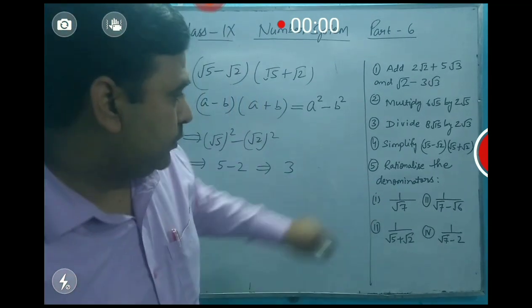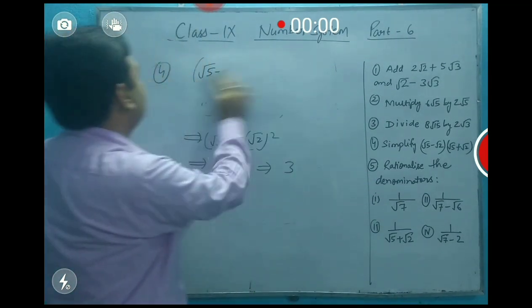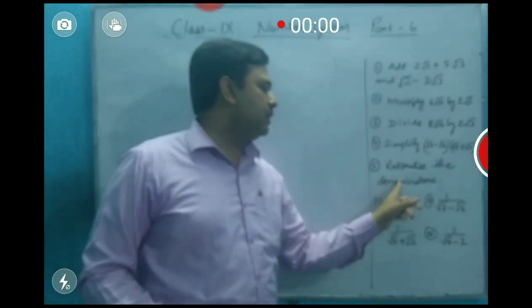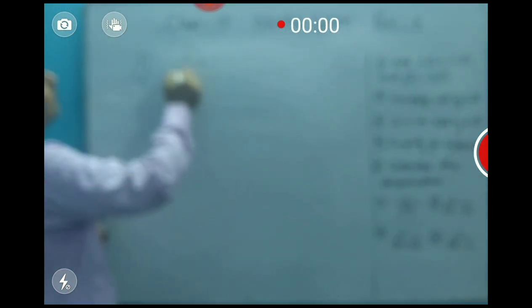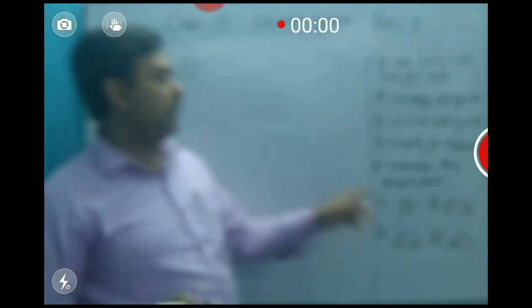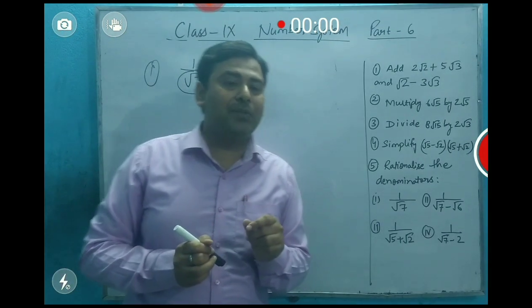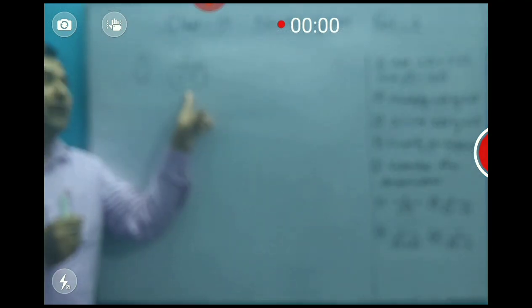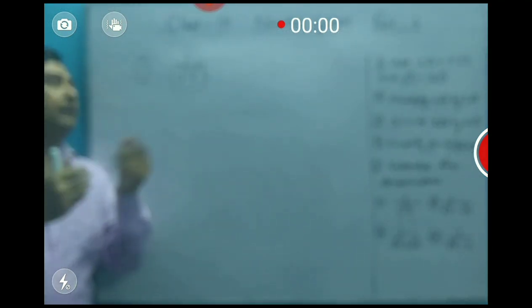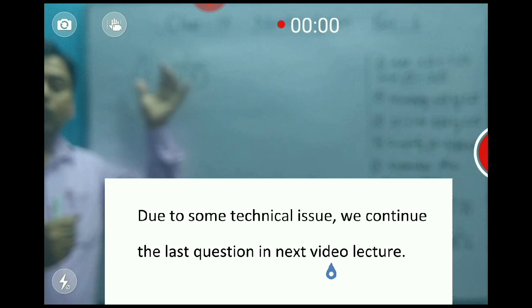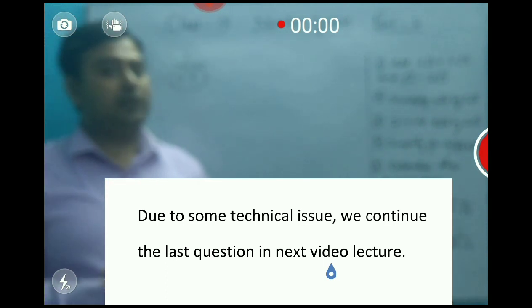Now, a very important question — Question 5 — which involves rationalization of the denominator. The first question is 1 upon √7. The goal is to rationalize the denominator, meaning the denominator here is an irrational number, and we need to make it rational.